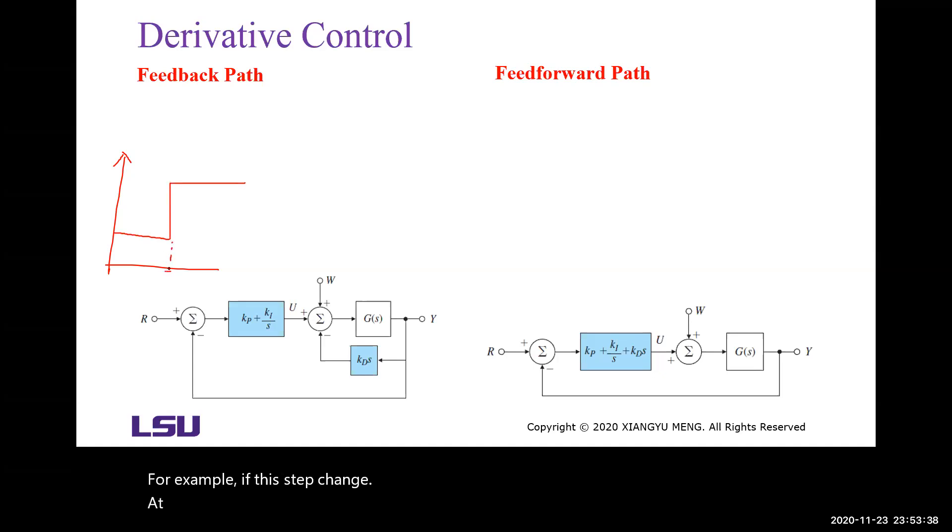At this point, the derivative of the function will be very large. Therefore, there is a sharp jump in the control signal. Because the step signal will be differentiated at that spot, it will give a very sharp response. Then to reduce this undesired behavior, we can put the D controller in the feedback path.